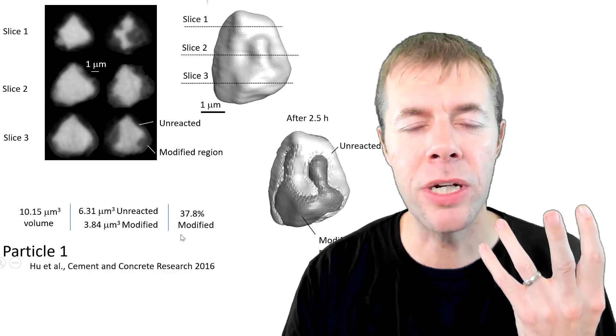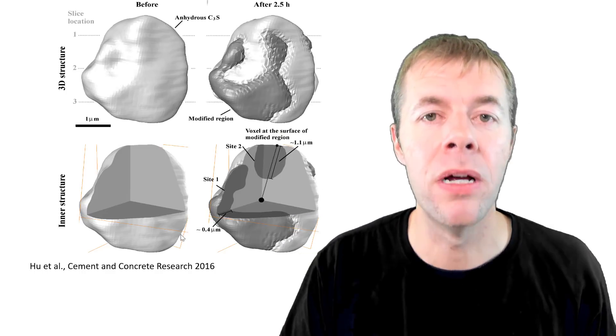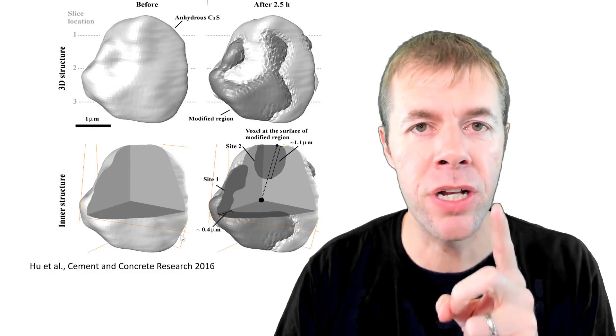And we can calculate volume of the original particle, the volume of the unreacted, the volume of the modified region and get the percentage of the modified region of the particle. We can also look inside of it and see what's going on. Is this modified region just at the surface? Actually, it's not. It actually penetrates and goes inside the particle. And we can measure the depth of penetration that each one of these modified regions go.